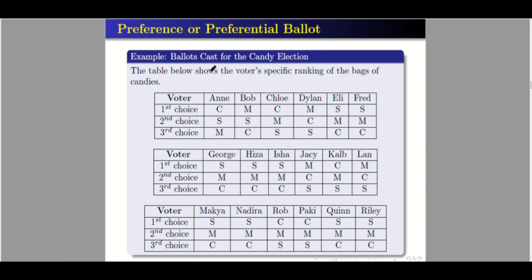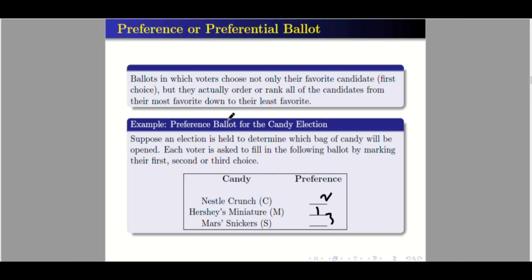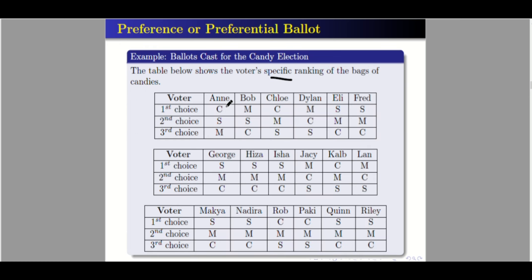Say for example we have these ballots cast for a candy election. The table shows the voters' specific ranking of the bags. There are three choices. The voters are Ann, Bob, Chloe, Dylan, Ellie, up to Riley. Ann voted Crunch as her first choice, Sneakers as second, and Miniature as third. Bob's first choice is Miniature, second is Sneaker, and third is Crunch.